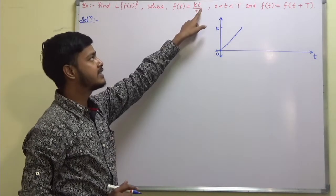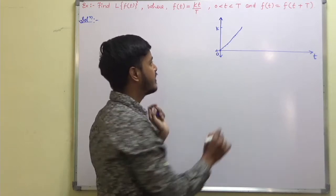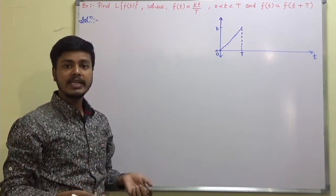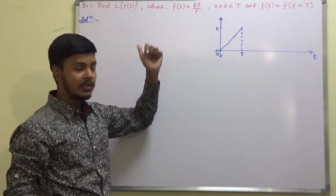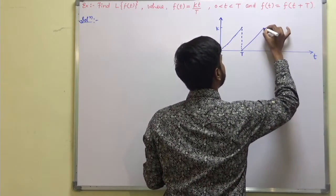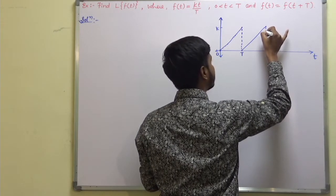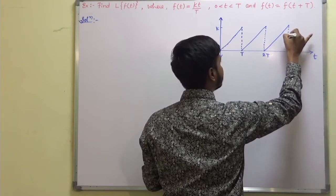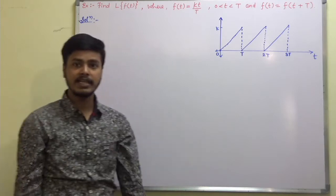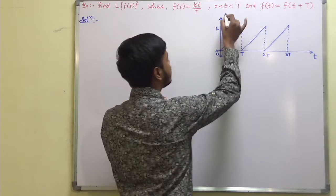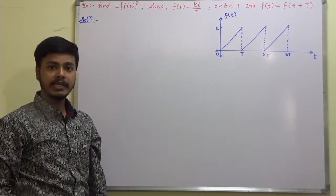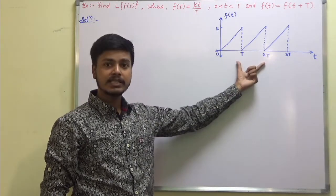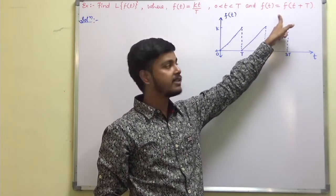The moment we reach t equal to capital T, we cannot take that value, so at that point there is no value. Again, taking values of t greater than 0 and less than capital T gives values going up to k, then no value at 2T, and similarly no value at 3T. So as you can see from the graph, the given function f(t) is periodic with period T.